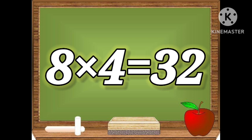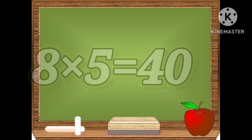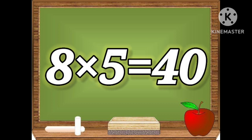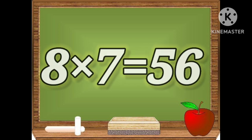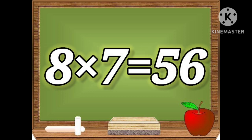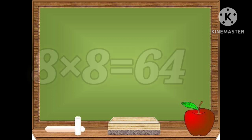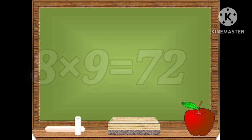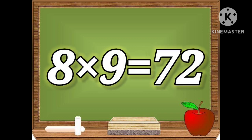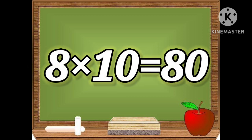Eight fours are thirty-two. Eight fives are forty. Eight sixes are forty-eight. Eight sevens are fifty-six. Eight nines are seventy-two. Eight tens are eighty.